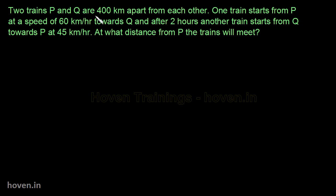Two trains P and Q are 400 km apart from each other. One train starts from P at a speed of 60 km per hour towards Q, and after two hours another train starts from Q towards P at 45 km per hour. At what distance from P will the trains meet?